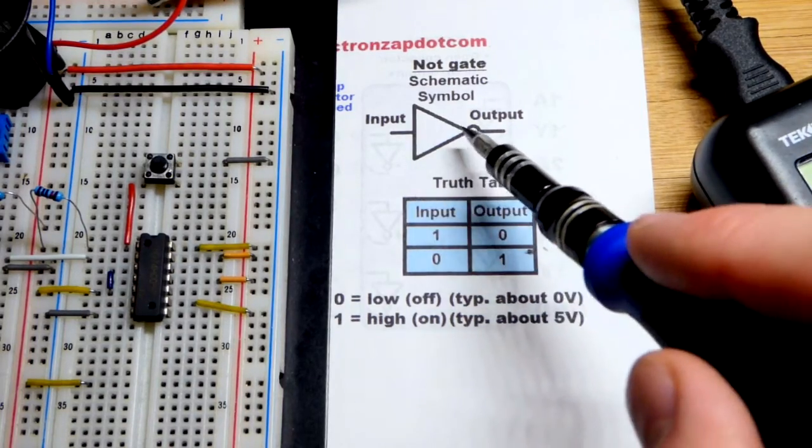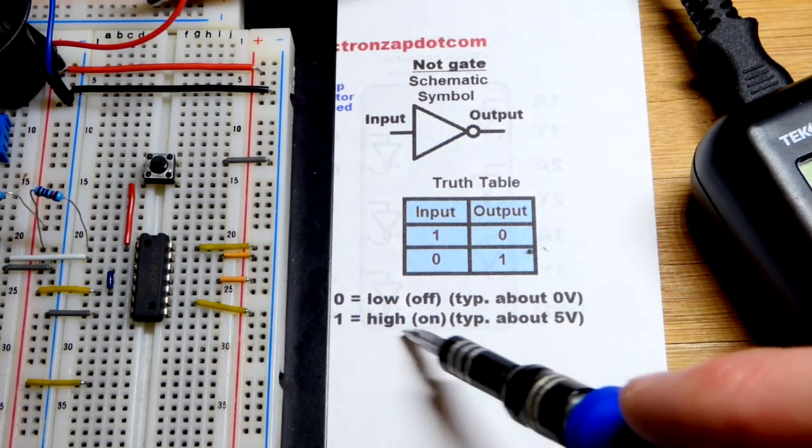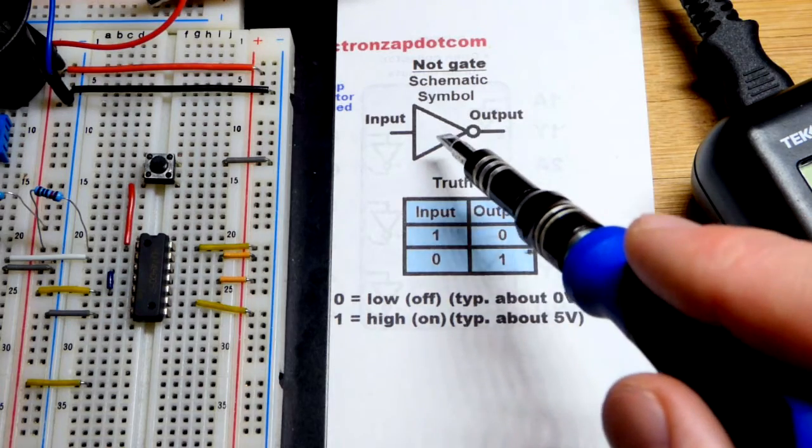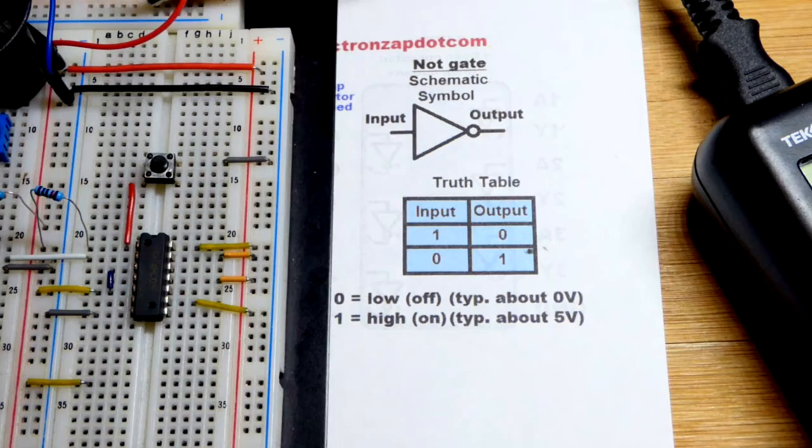So now to wrap this up, we have a NOT gate which has the property of if the input is high, in this case 5 volts, then the output is low, 0 volts. Whereas if the input is low, then the output is high. And so that's the NOT gate.